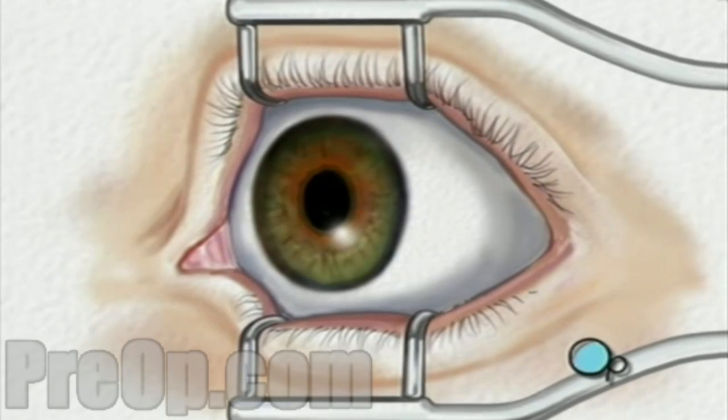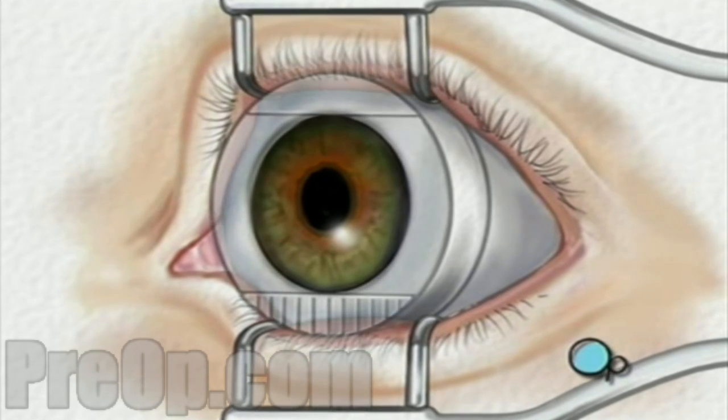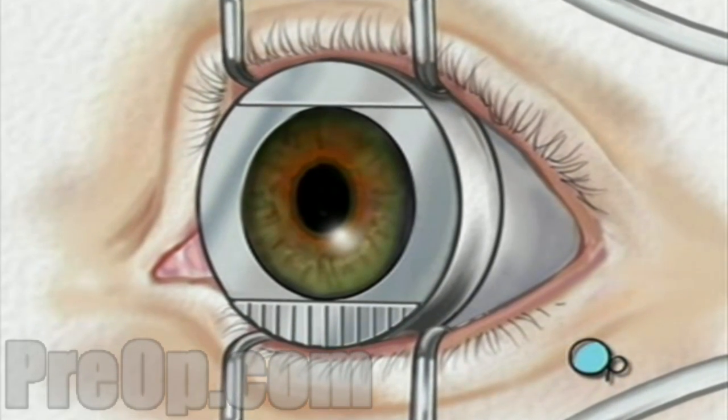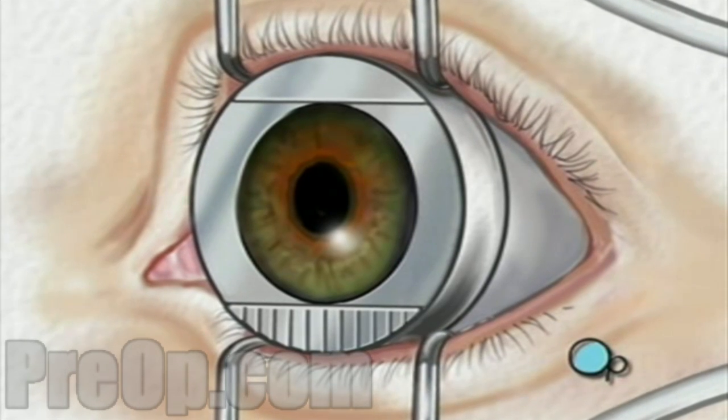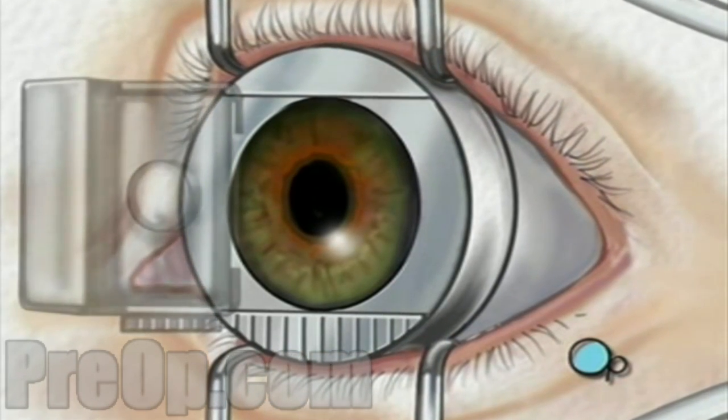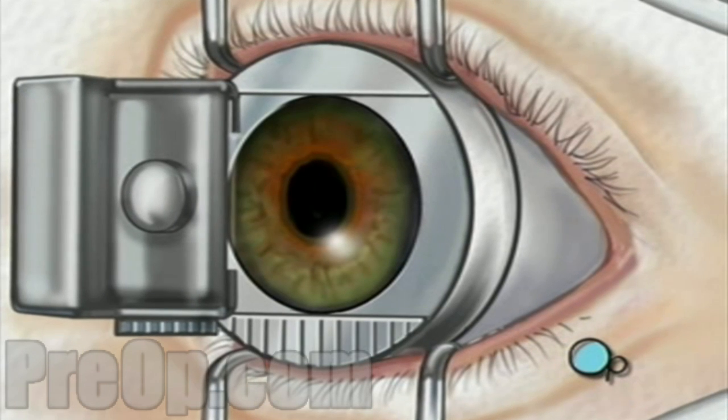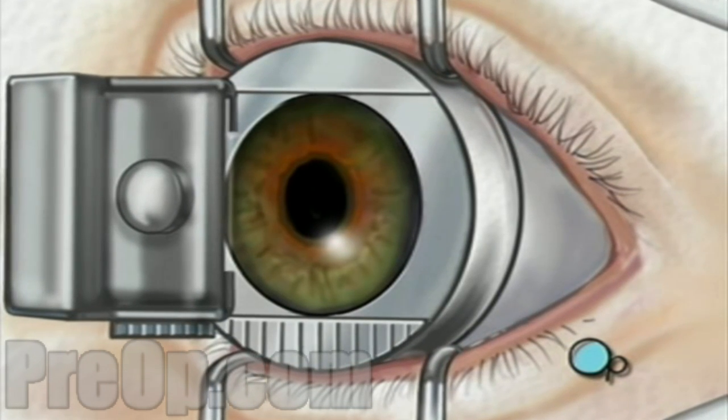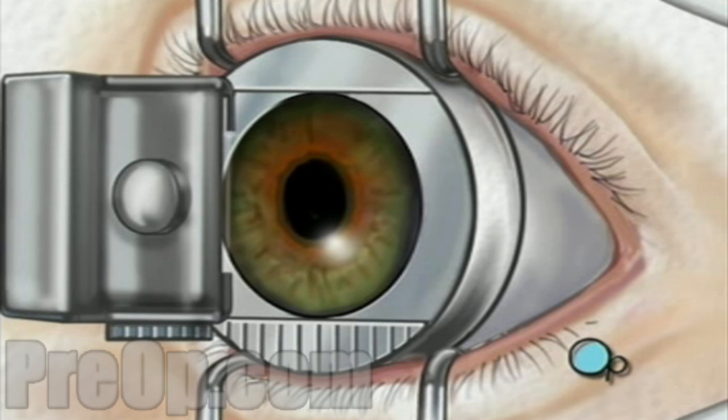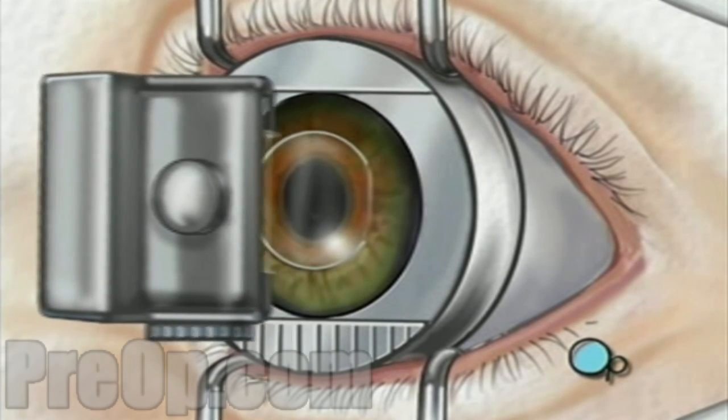A suction ring will be placed on the eye to prevent movement and to maintain pressure within the eye. When the operative field is numb, the doctor will use an automated microsurgical instrument called a microkeratome. This tiny instrument will carefully create a thin corneal flap, which remains hinged to the eye.